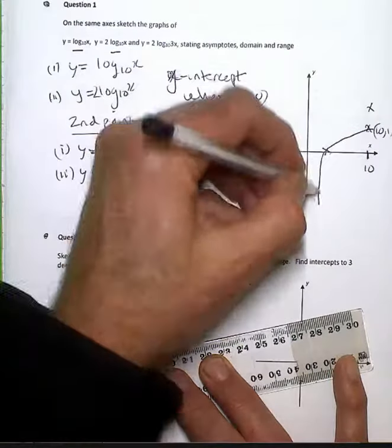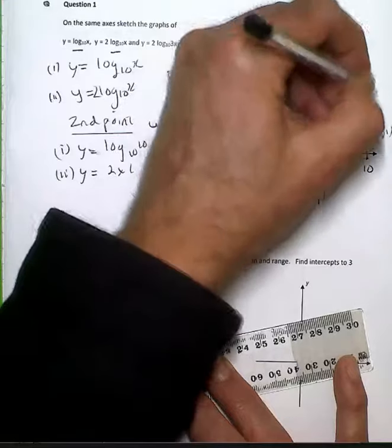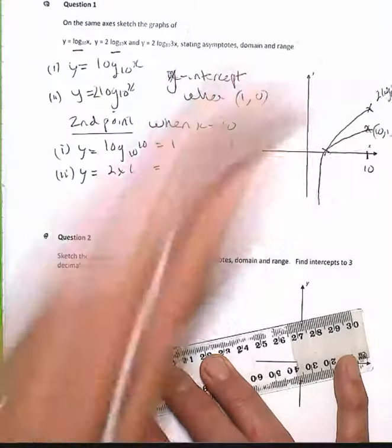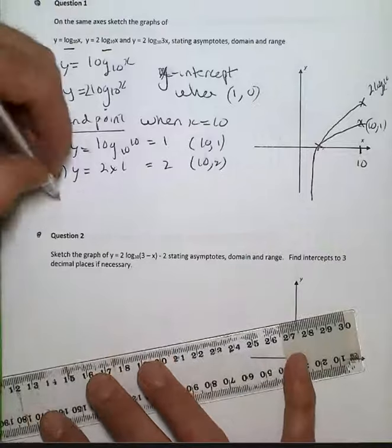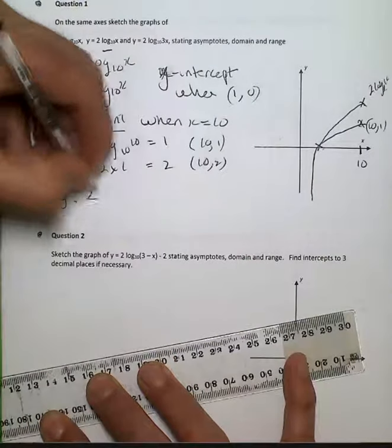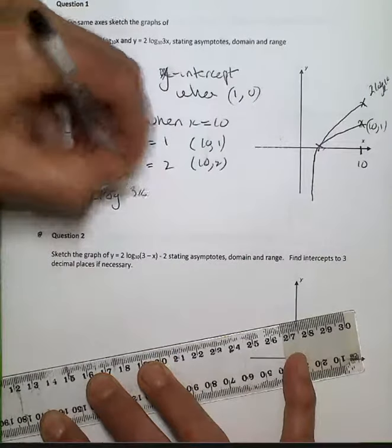So the first graph, and the 2 log 10 to the x graph will look like so. Now, when I deal with y is equal to 2 log 3x to the 10,